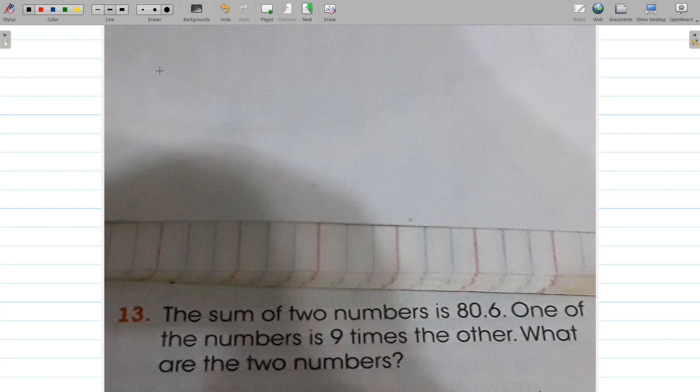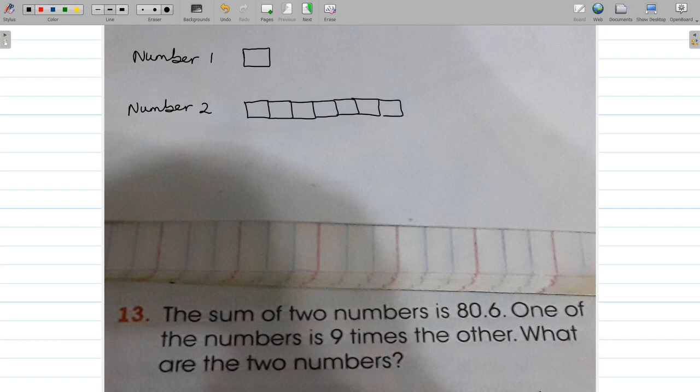So number one and number two. Number one has some value, but we don't know what it is. We need to find out. And we know that the other one has nine times the value of that number: one, two, three, four, five, six, seven, eight, nine. Now these are nine equal portions. The other clue they give us is that the sum...